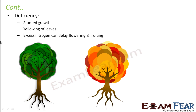Excess nitrogen can delay flowering and fruiting. It is not only that nitrogen will always be deficient — if too much nitrogen is present in a plant, that can also have adverse effects. Each mineral should be present in the right amount, neither deficient nor in excess. If nitrogen is present in excess, it can delay flowering and fruiting. Flowers and fruits are the reproductive structures of a plant, so if they are delayed, the process of reproduction itself is delayed, which is a major concern because new plants would not be formed.